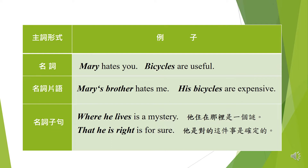第二個句子：His bicycles are expensive，它的脚踏車很昂貴。His bicycles 同樣是一個名詞片語，當作句子的主詞。